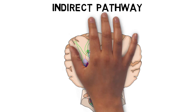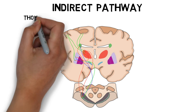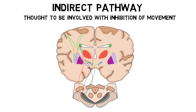The indirect pathway is a circuit in the basal ganglia hypothesized to play a role in the inhibition of movement. If you're not already familiar with the direct pathway of the basal ganglia, you might want to watch my video on the direct pathway before you watch this video.